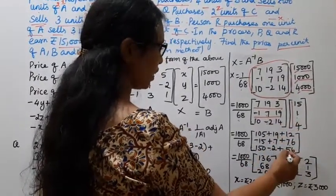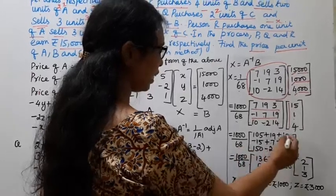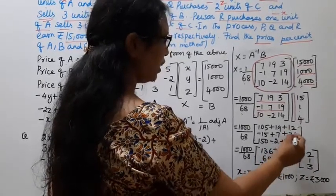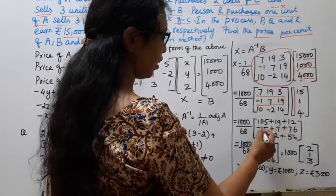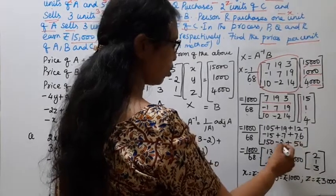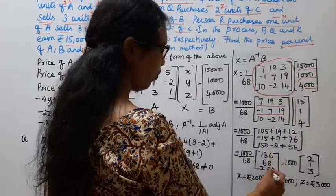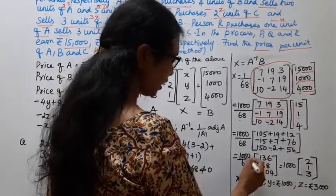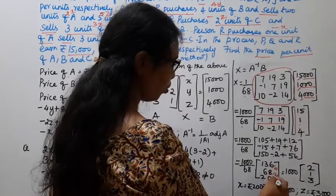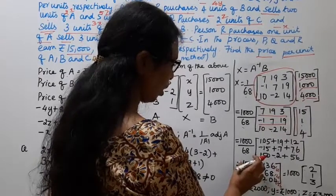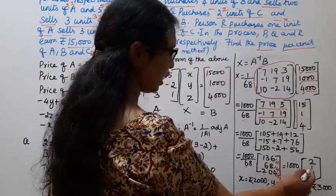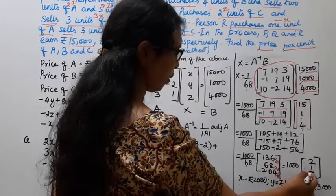1000 by 68. Now, simplify: 105, 19, 12. 136. 76 plus 7 is 83. 150, 56. 206, minus 2. 204. Now, 136, 68. 2. 68. 204, 68. 3.